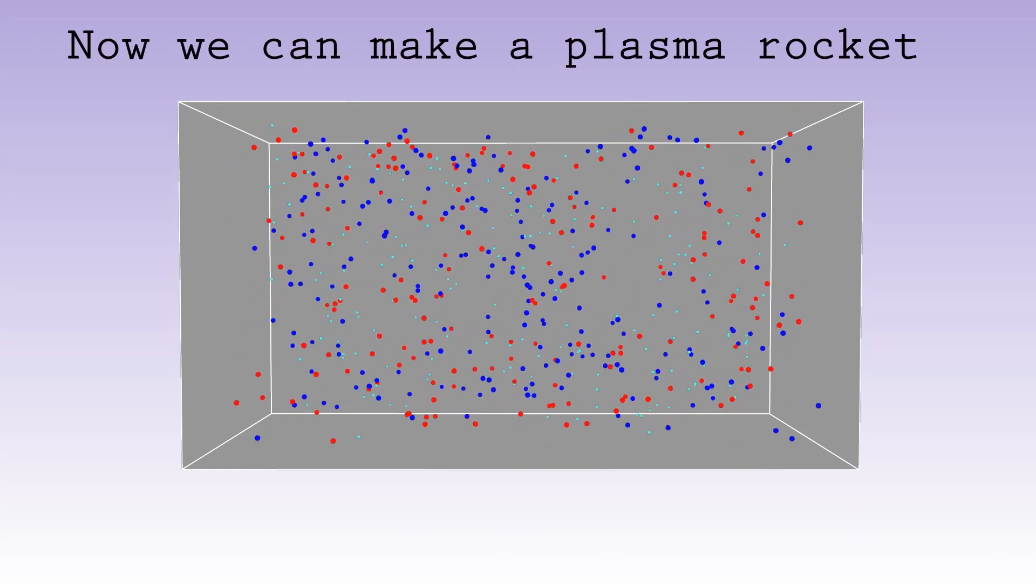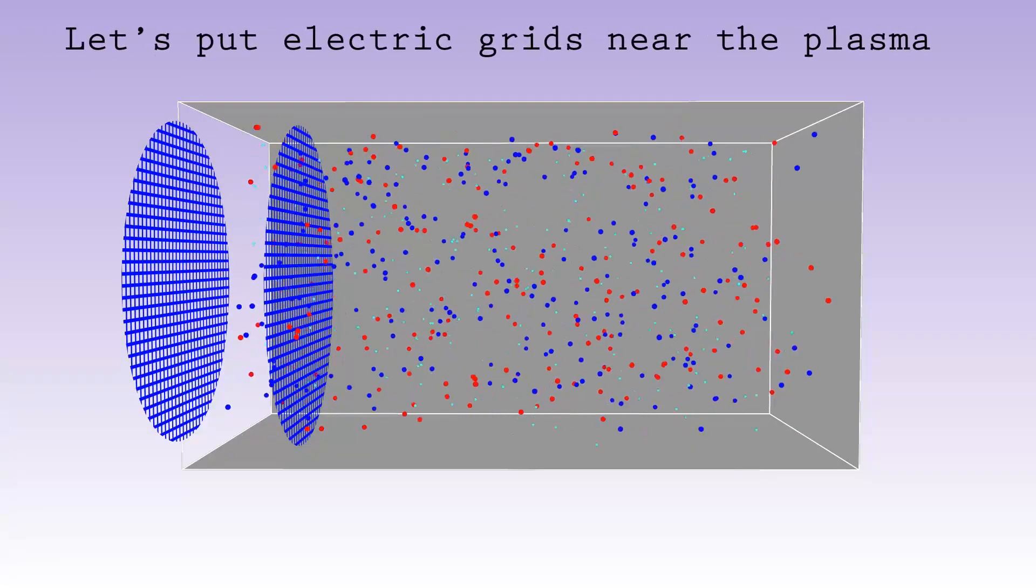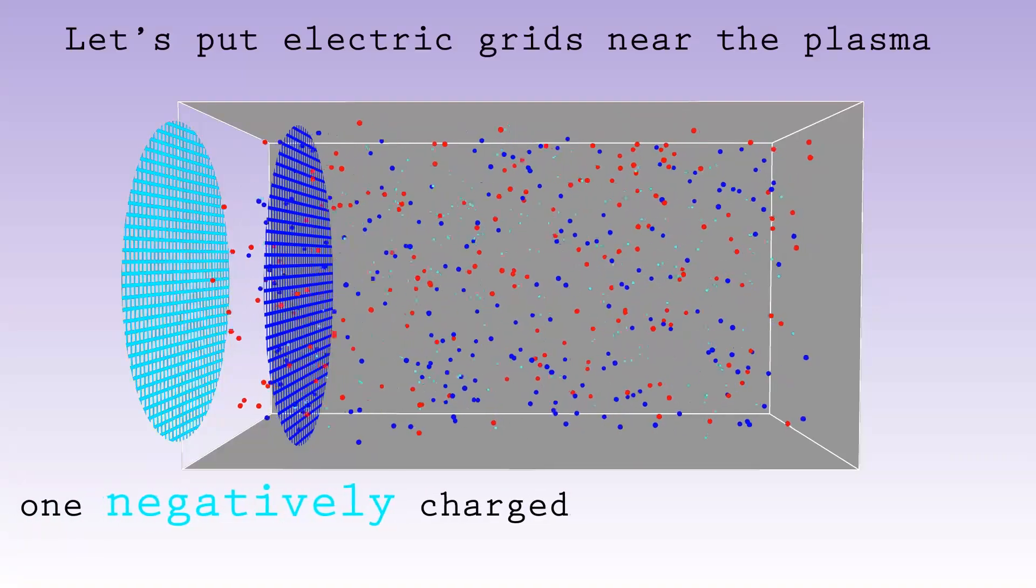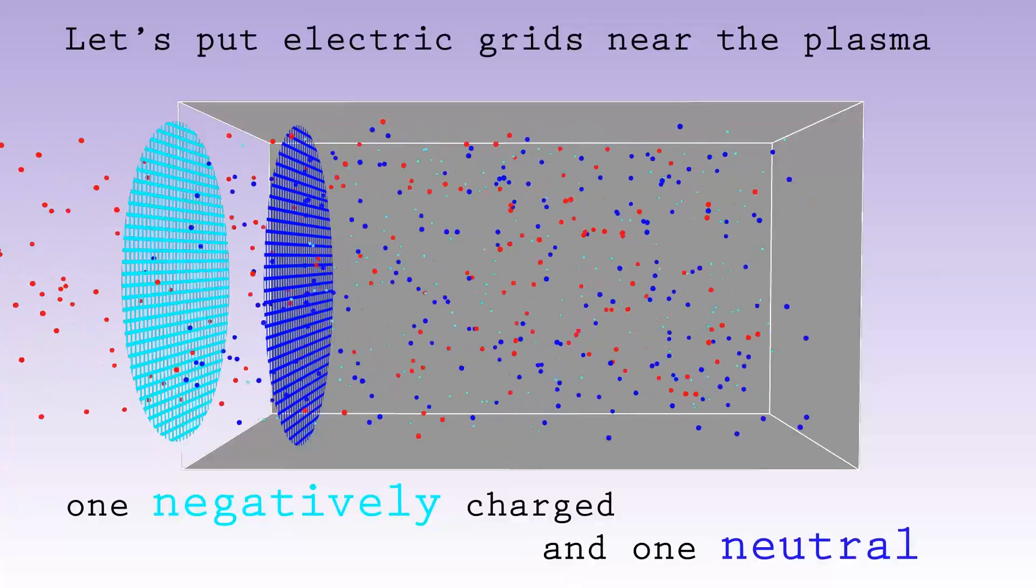Because the ions of the plasma are charged, we can use electric fields to move them around. If we put two grids in the plasma, and keep one neutral while the other is made electrically negative, we create an electric field between the grids.